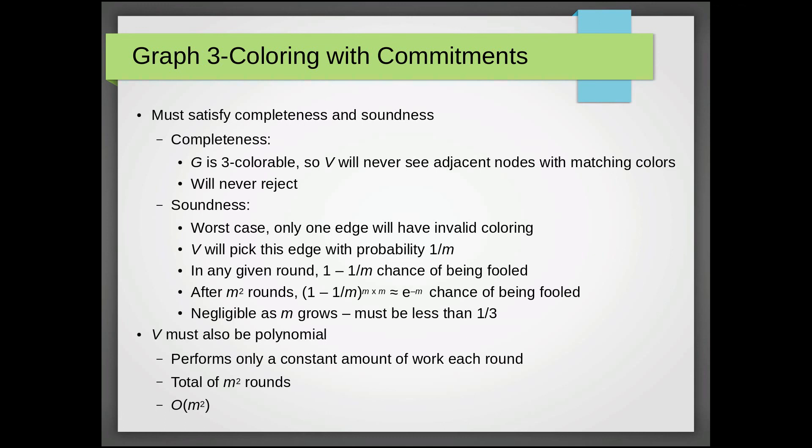So for this to be an interactive proof system, we have to show a couple things. First, we must show that this satisfies completeness and soundness. So for completeness, we have to show that for every graph that does have a valid three coloring, we accept it with probability greater than two thirds.